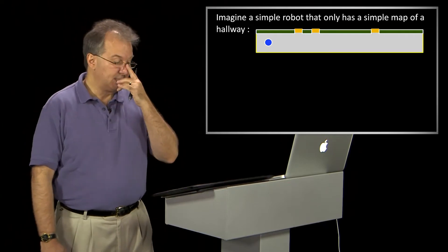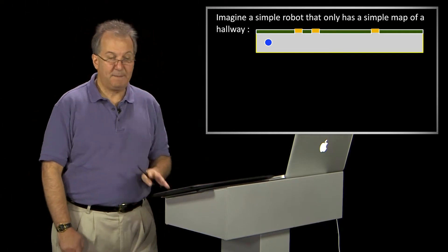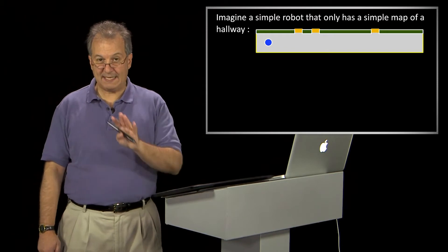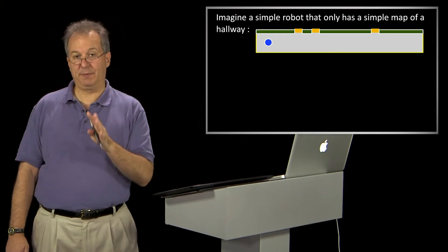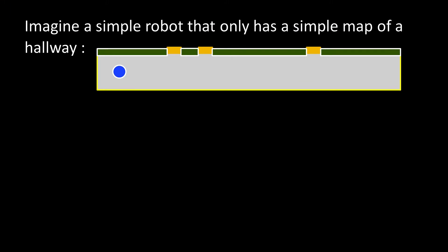We're going to illustrate this with a very simple example. And here it is. So imagine you've got a robot that just has two things. It has a map of a hallway. So here you're seeing a hallway.